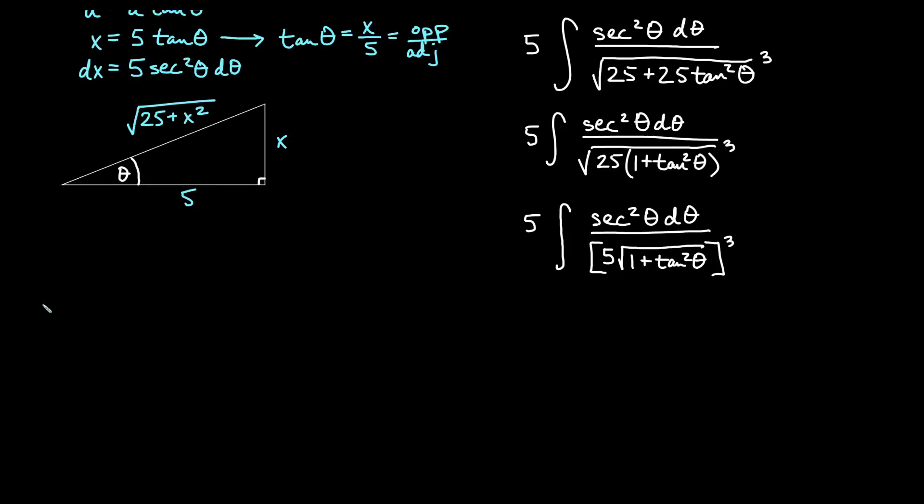So we're going to go ahead and continue over here. So I will get 5. 5 cubed would be 125. So I have 125 that I can pull out from the bottom. And then I get secant squared theta d theta.